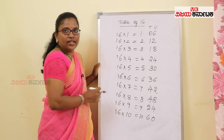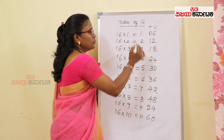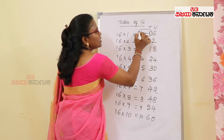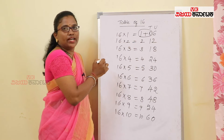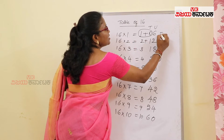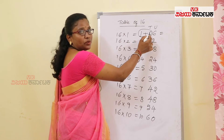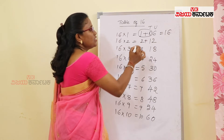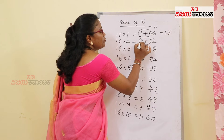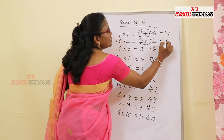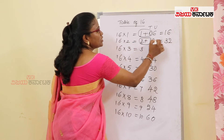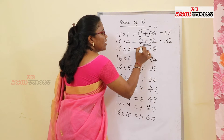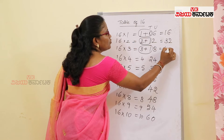Now, we will have 10th table numbers. Now, we will add the 10th place. The result is the 10th place. 1 plus 0 is 1. Keep the units place as it is. Now, 2 plus 1 is 3. Keep the units place as it is. Now, 3 plus 1 is equal to 4.